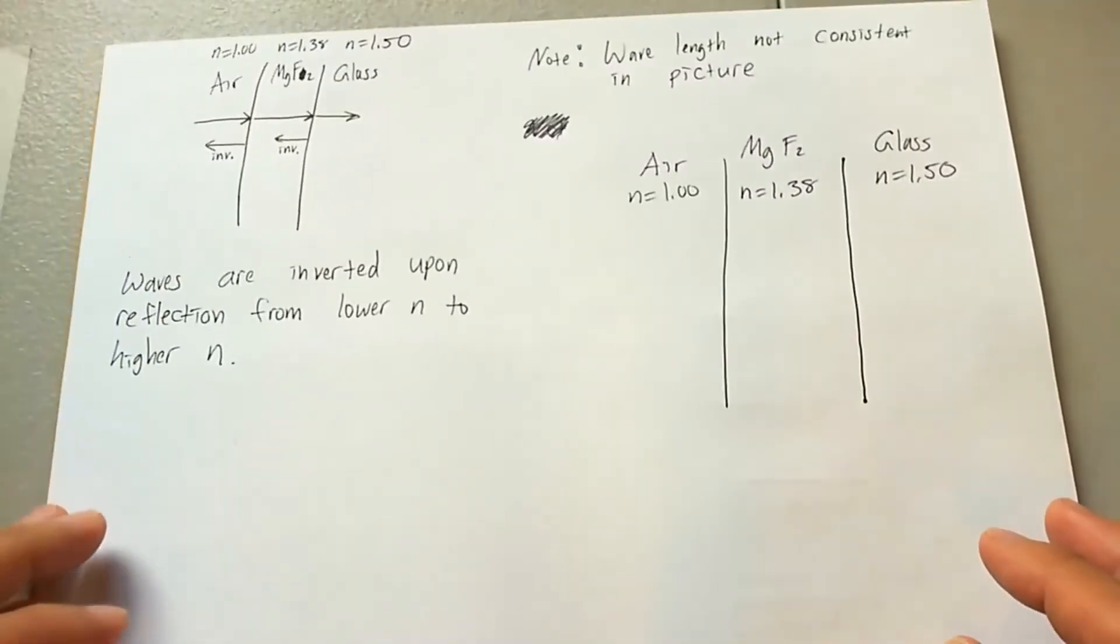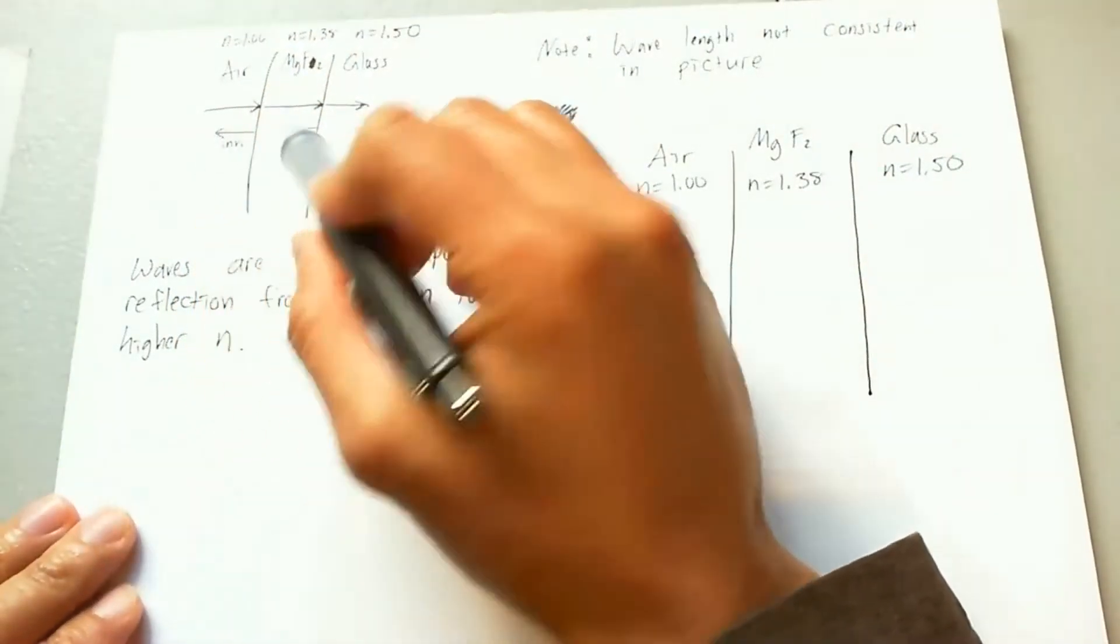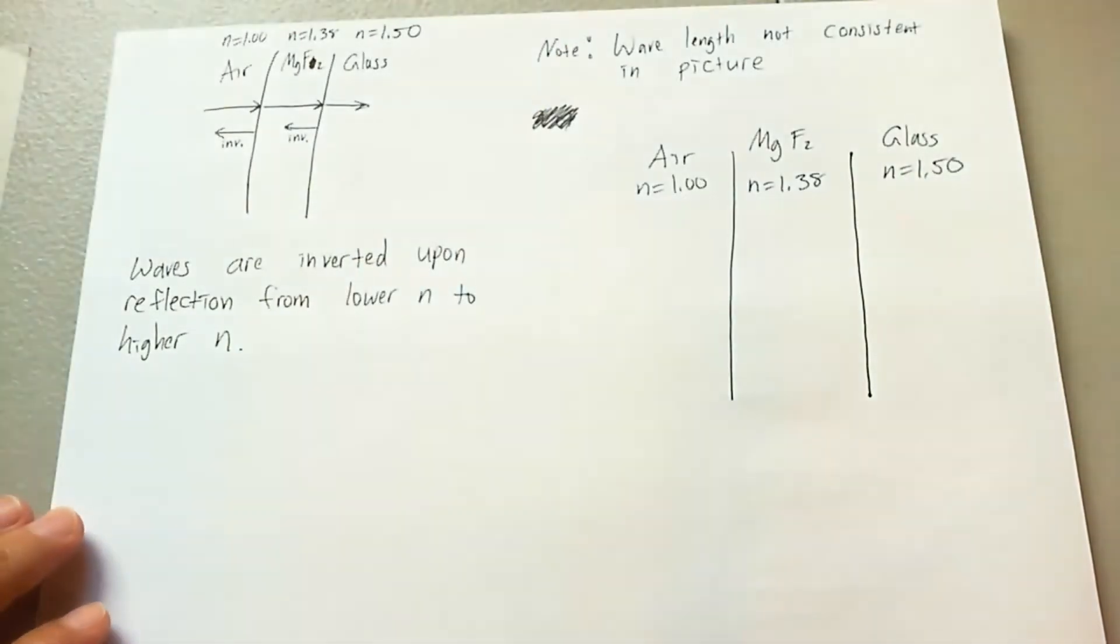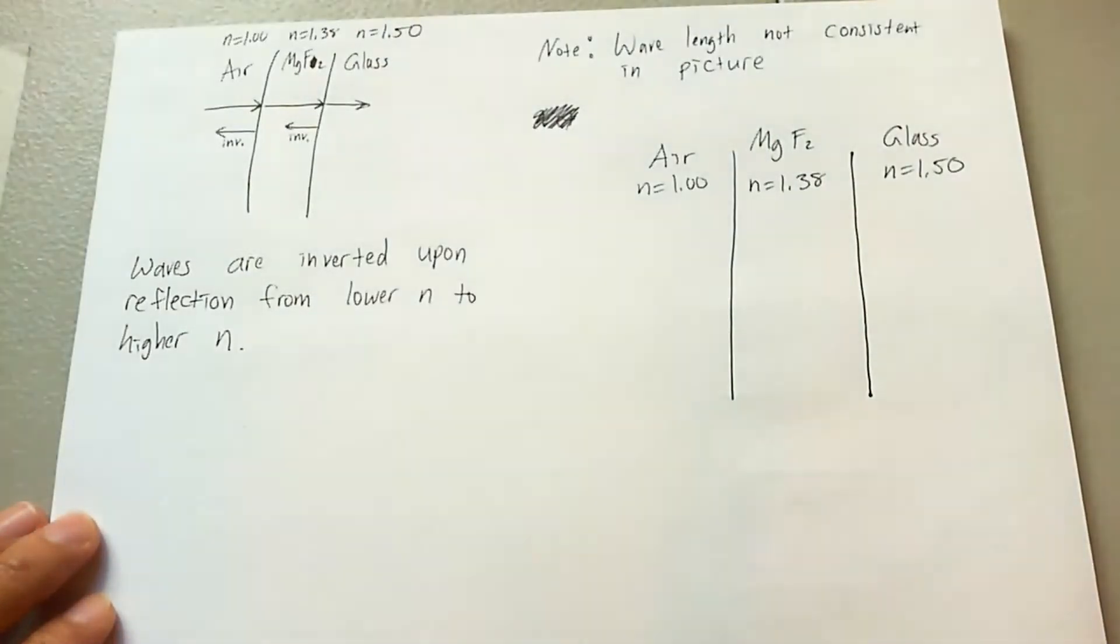In this problem, you have three media. You have air, where incoming light comes from. You have magnesium, looks like some sort of magnesium fluoride material, or I don't know what it's called chemically, and you have glass.